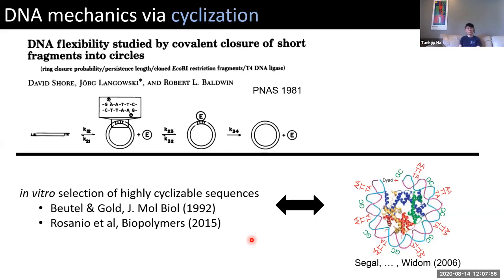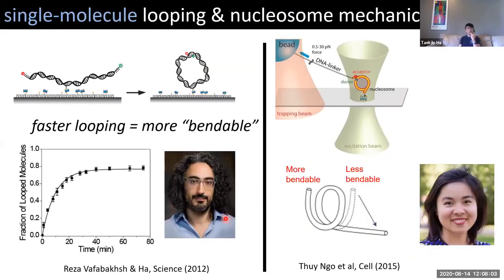In my own lab, previous students made some interesting observations using single molecule measurements. Reza developed a single-molecule looping or cyclization assay where he tethers DNA of about 100 base pairs in length to a surface, with overhangs long enough so that once the two ends anneal they stay together for a long time without needing a ligase enzyme. He used FRET between dyes to measure the looping time scale experimentally, and found this time scale to be dependent on the DNA sequence — if looping occurs more quickly, that DNA sequence is more bendable.